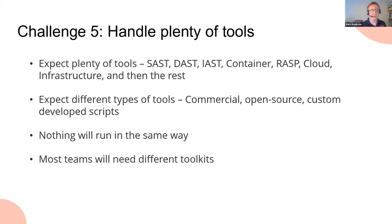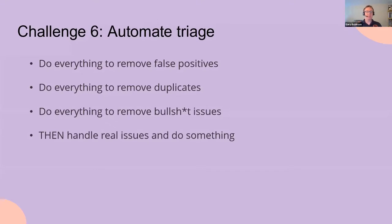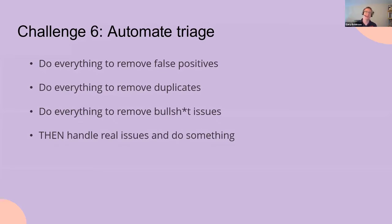Different teams need different toolkits — Python developers need Bandit and SonarQube; C# developers need different tools. Your process should be consistent but the tools will vary. Automate triage as much as you can. Do the first triage yourself, then automate removal of false positives, duplicates, and nonsense issues. If you achieve that, teams spend less time on noise and more time on real issues — and that really helps the whole culture.